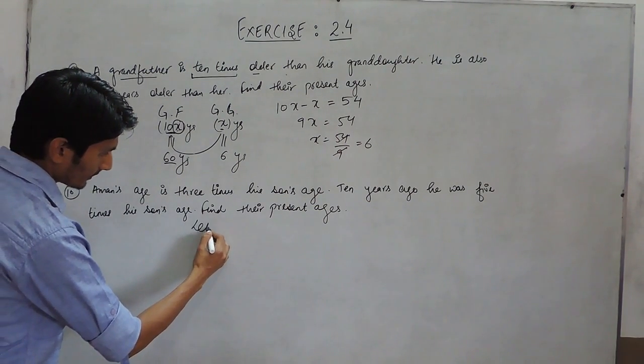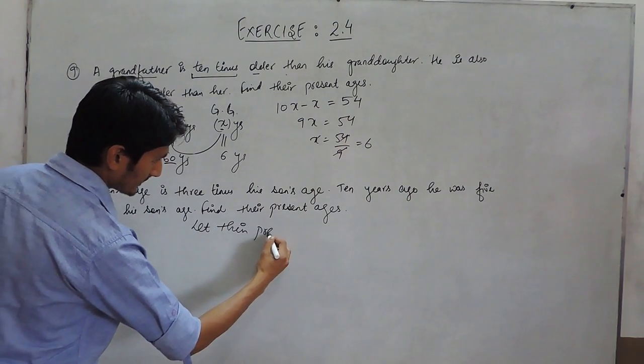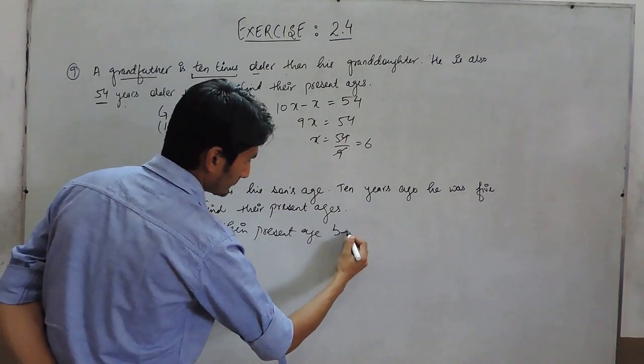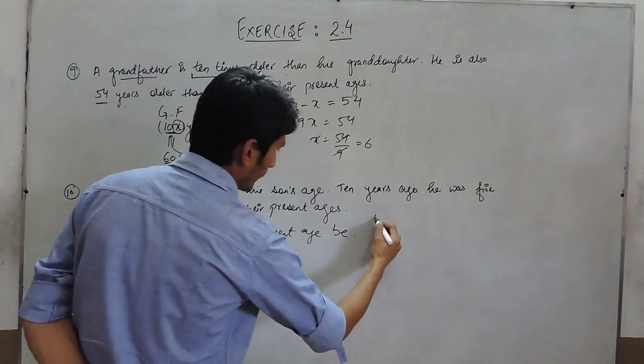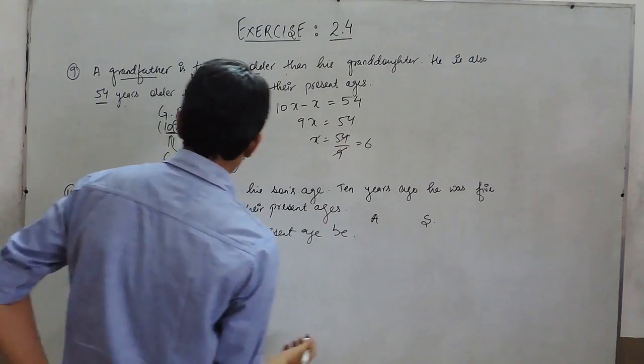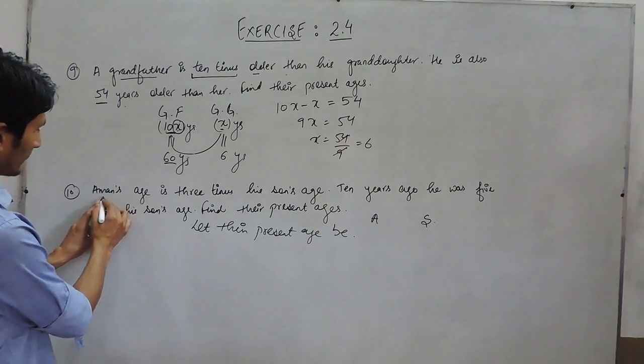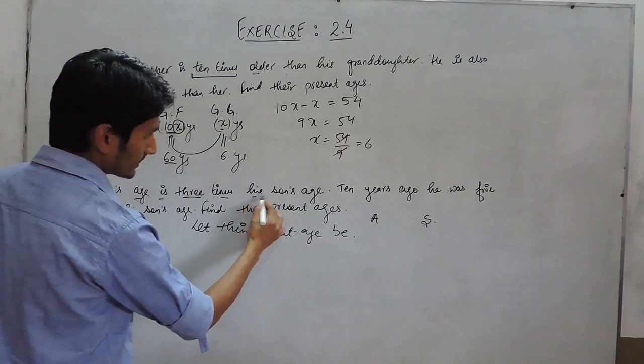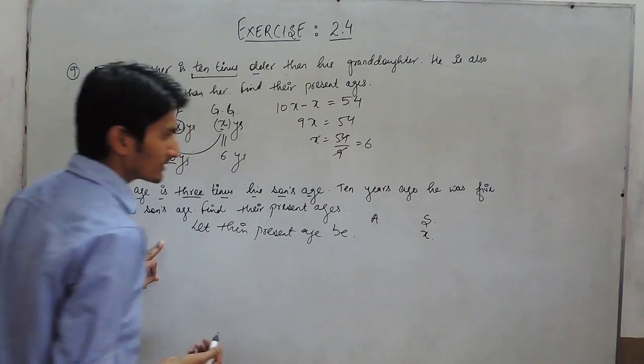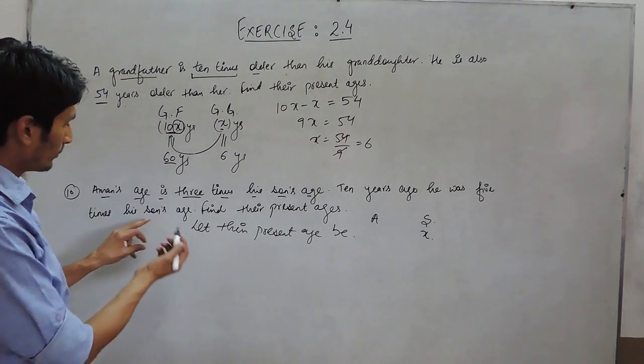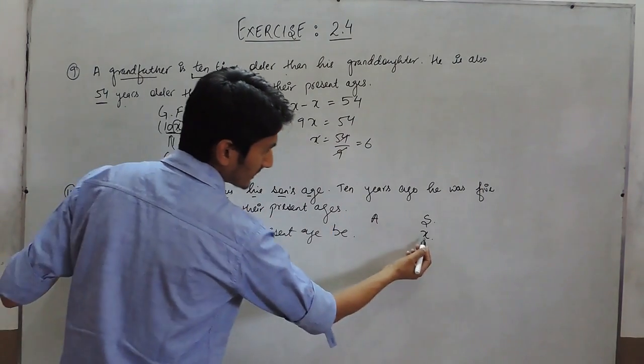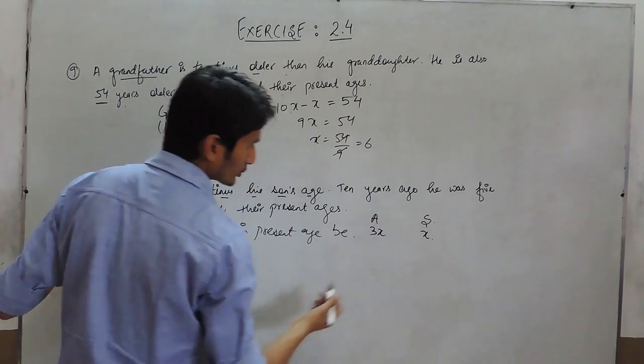So, let's suppose Amman's age and his son's age. In the first statement, it is given that Amman's age is 3 times his son's age. Means if son's age is x years, so Amman's age must be 3 times of his son's age which equals to 3x.